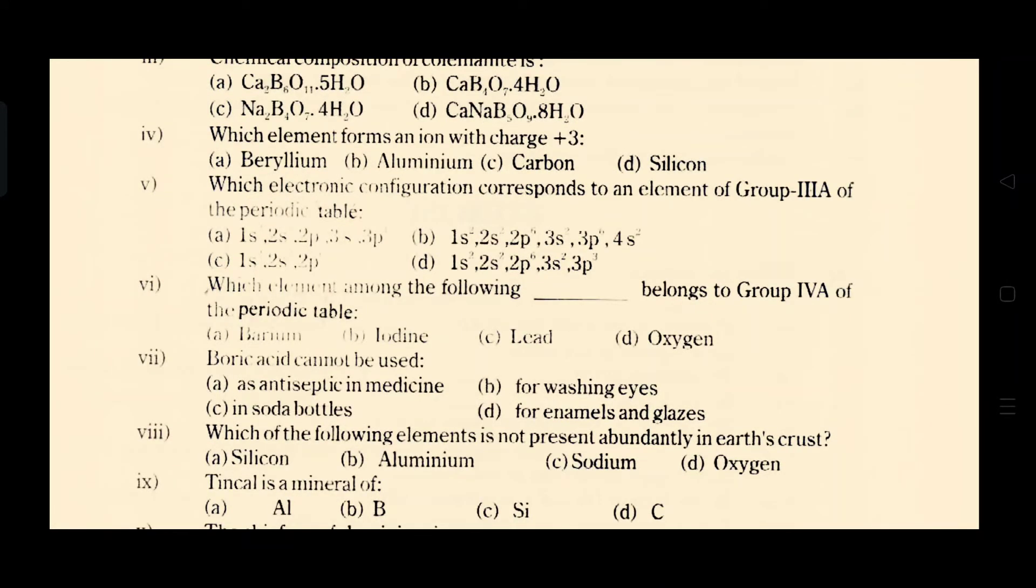And the fifth MCQ is which electronic configuration corresponds to an element of group 3A of periodic table. Option A is the correct option which is 1s2, 2s2, 2p6, 3s2 and 3p1. As we know the group 3A elements have one electron in their outermost p orbital, so option A is the correct option.